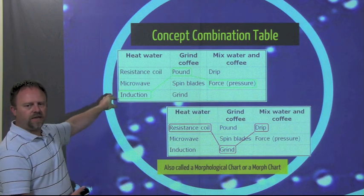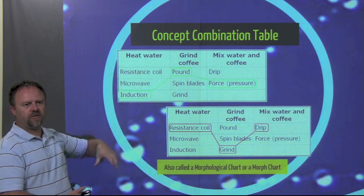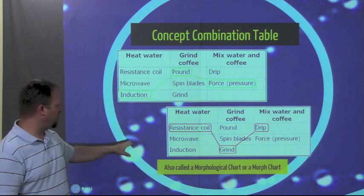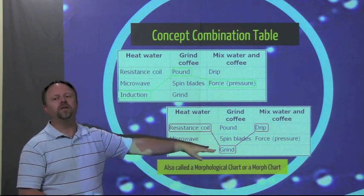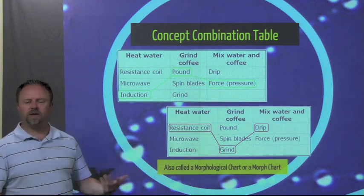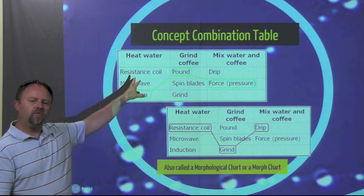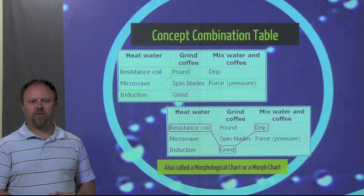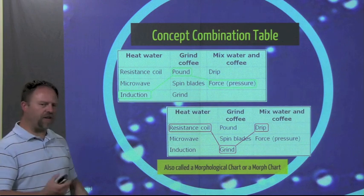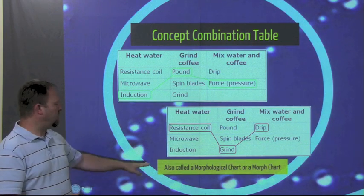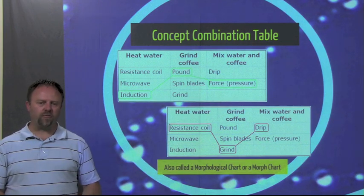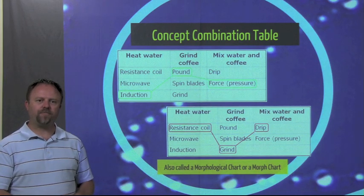And you can come up with a different combination - that's the lower one - to get a different overall design. And then we can try to make a judgment on which of those overall designs are better. That will be on our concept selection stage. This is also called a morph chart or a morphological chart. That's another name for it.